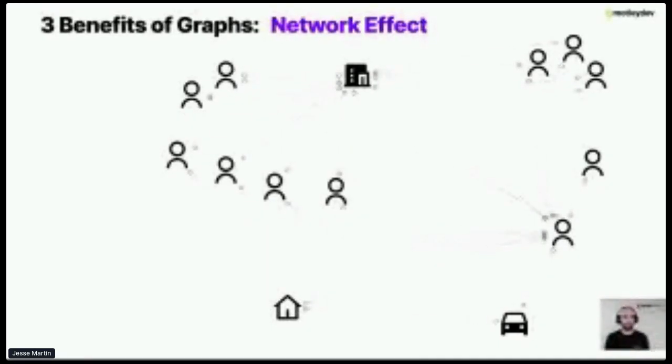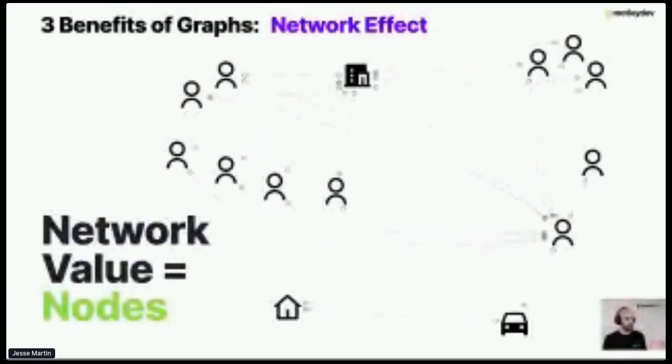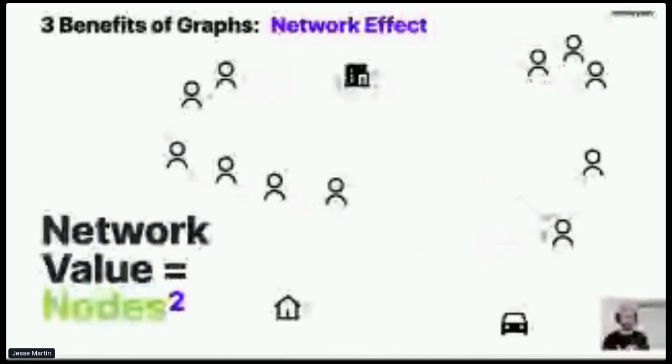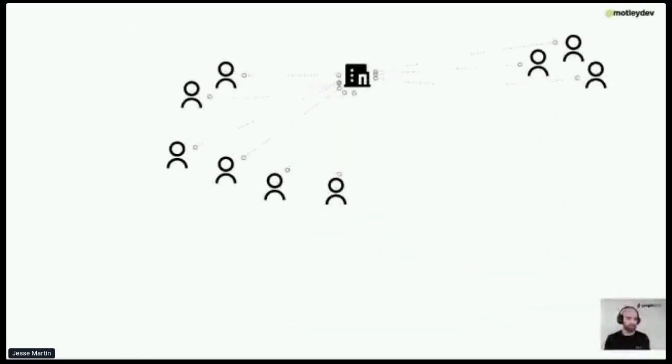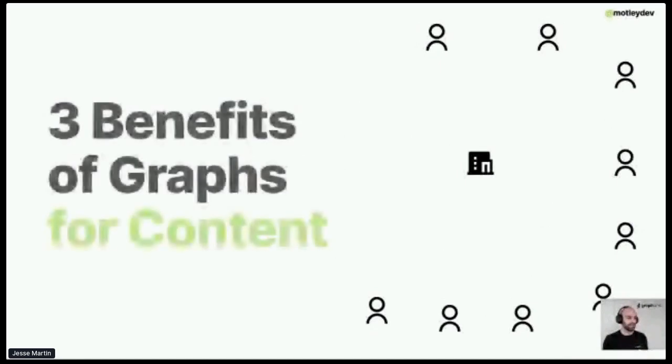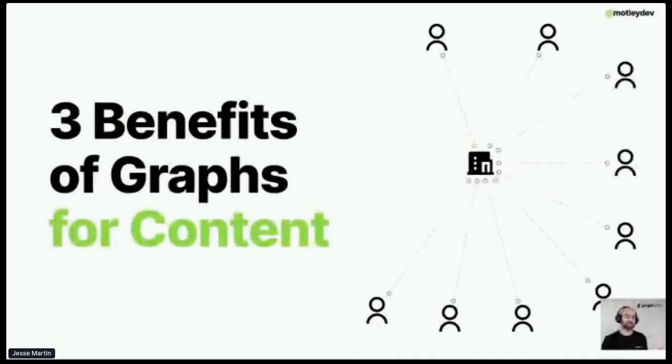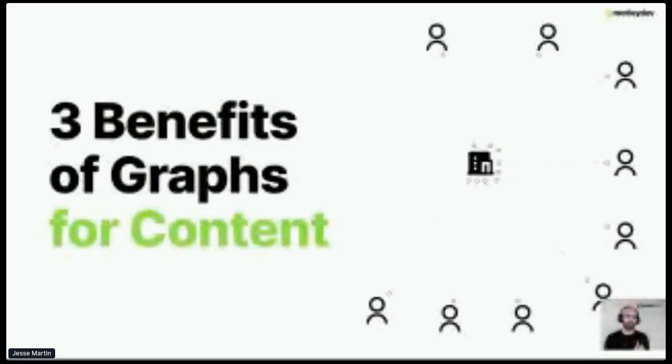The next one is the network effect. The network effect of graphs is that the more nodes that you add, the theory is that the value of a network is the square of the total nodes. This is exactly what most social networks are based off of. This is why companies work quickly to hit that critical mass point, because the more nodes you get inside the graph, the more inherent value there is. These are three core concepts behind graph benefits, and we're going to look at how these values actually apply to content.